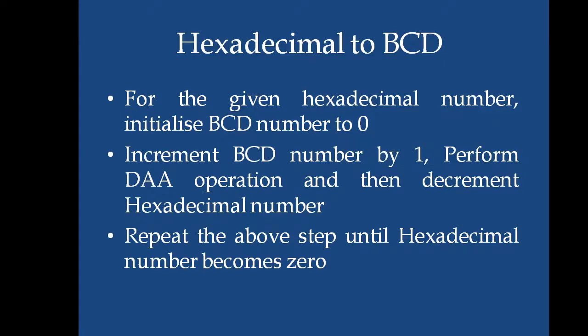Given a hexadecimal number, we will have a BCD number initialized to 0. Then, the BCD number will be incremented by 1. For each increment, the DAA operation will be performed.